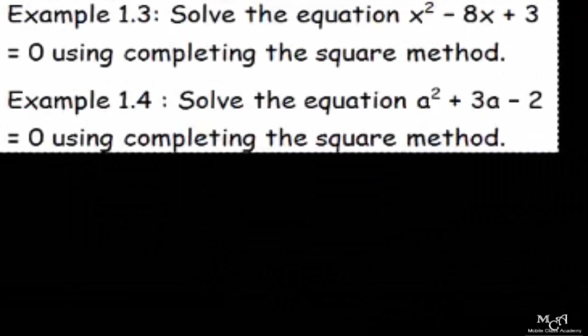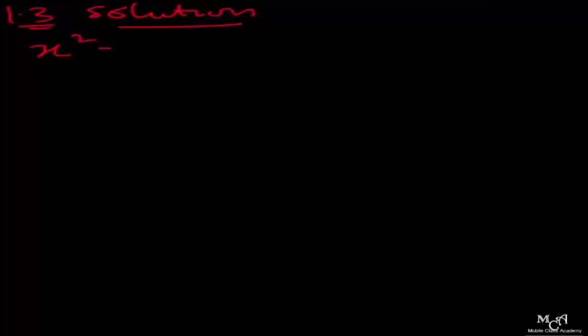Now let us look at how we can actually solve quadratic equations using the completing the square method. Example 1.3 on the board says: solve the equation x squared minus 8x plus 3 equal to 0 using completing the square method. Solution: x squared minus 8x plus 3 equal to 0.